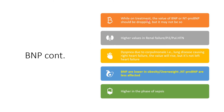While on treatment, the value of BNP or NT-proBNP should be dropping. Elevated values are likely to be seen in renal failure or pulmonary embolism, so it depends on associated conditions. Even if the person is already on good treatment for heart failure and the value is not dropping, please look out for issues in the renal system, pulmonary system, and so on.